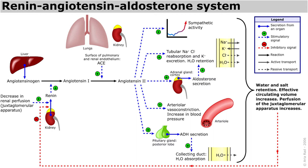Plasma renin then carries out the conversion of angiotensinogen, released by the liver, to angiotensin 1. Angiotensin 1 is subsequently converted to angiotensin 2 by the angiotensin-converting enzyme found on the surface of vascular endothelial cells, predominantly those of the lungs and the epithelial cells of the kidneys.